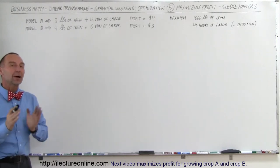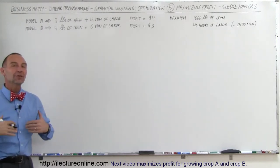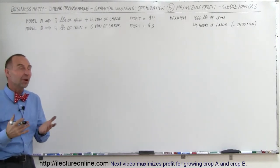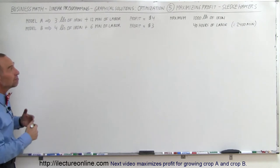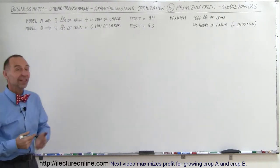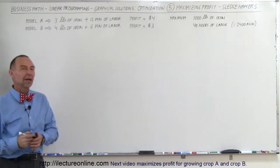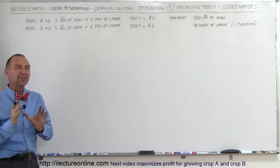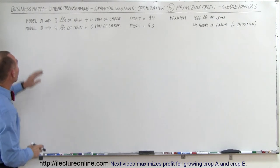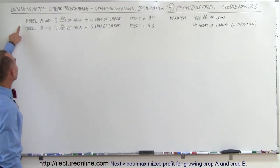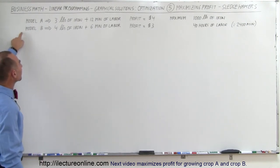Welcome to Electronline. We're going to do another optimization problem. In this case, we're going to be producing sledgehammers and we're going to try and maximize the profit. The information is that we produce two models, A and B.